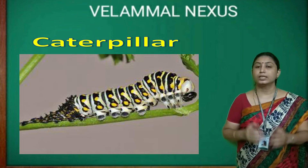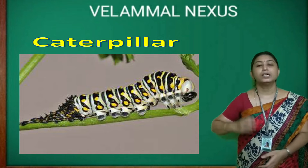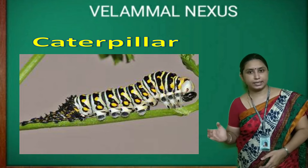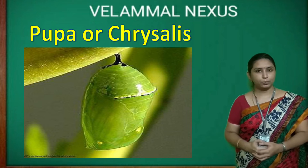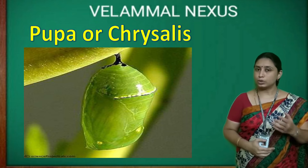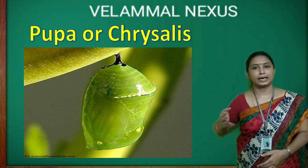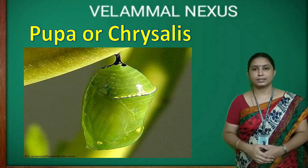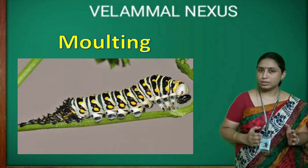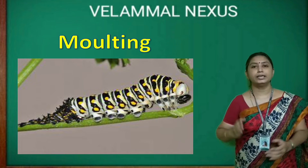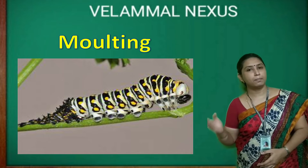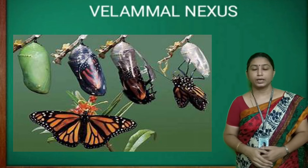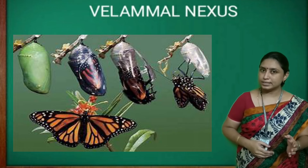In the next stage, the caterpillar sheds its skin and becomes a pupa, also called chrysalis. The process of shedding its old skin is called moulting.